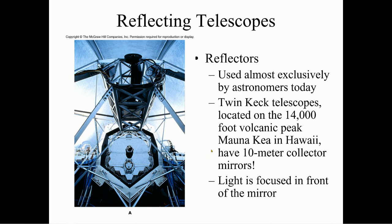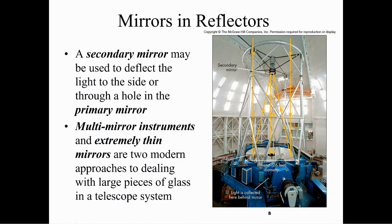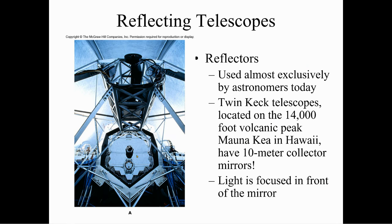The big reflecting telescopes we have are the Twin Keck telescopes, located on the 14,000-foot volcanic peak Mauna Kea in Hawaii, and they have 10-meter collector mirrors. Light is focused in front of that mirror. A secondary mirror may be used to deflect the light to the side or through a hole in the primary mirror. Multi-mirror instruments and extremely thin mirrors are two modern approaches. In fact, the 10-meter mirror is individual mirrors put together to form one large mirror — it makes it easier.